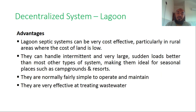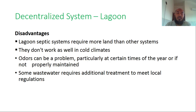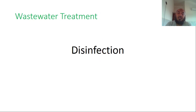Advantages of lagoon septic systems: they can be very cost-effective, particularly in rural areas where land cost is low. They can handle intermittent and very large sudden loads better than most other system types, making them ideal for seasonal places such as campgrounds or resorts. They are normally fairly simple to operate and maintain, and are very effective at treating wastewater. Disadvantages: lagoon systems require more land than other systems, they don't work as well in cold climates, odor can be a problem at certain times of the year or if not properly maintained, and some wastewater may require additional treatment to meet local regulations.